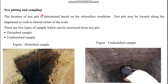Test pitting involves excavating a series of test pits to recover disturbed and undisturbed samples, which are used to determine the characteristics of the soil. In road construction, test pits may be located along the center line or offset from the center line. The two types of sampling are disturbed samples and undisturbed samples.